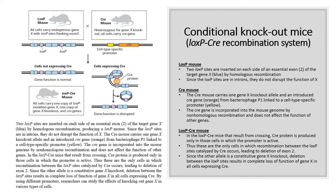To generate the conditional knockout mice, two LoxP sites are inserted on each side of an essential exon of the target gene X by homologous recombination, producing a LoxP mouse. Since the LoxP sites are in introns, they do not disrupt the function of X. The Cre mouse carries one gene X knockout allele and an introduced Cre gene from bacteriophage P1 linked to a cell-type specific promoter. The Cre gene is incorporated into the mouse genome by non-homologous recombination and does not affect the function of other genes. In the LoxP-Cre mice that result from crossing, Cre protein is produced only in those cells in which the promoter is active. Thus these are the only cells in which recombination between the LoxP sites catalyzed by Cre occurs, leading to deletion of the exon. Since the other allele is a constitutive gene X knockout, deletion between the LoxP sites results in complete loss of function of gene X in all cells expressing Cre.